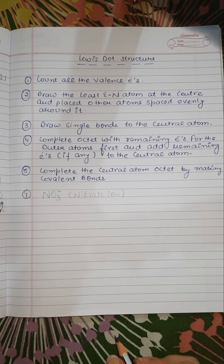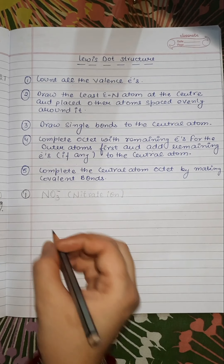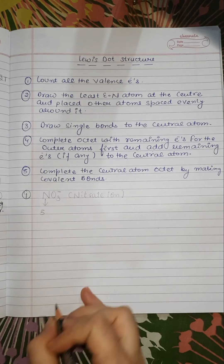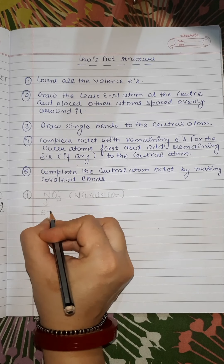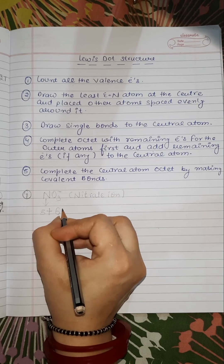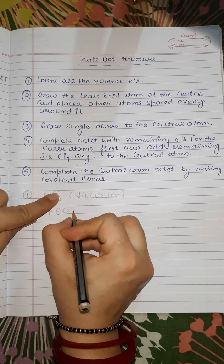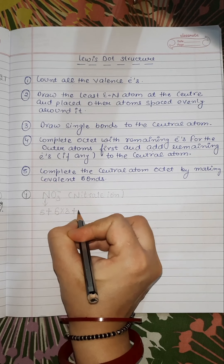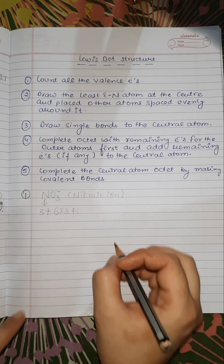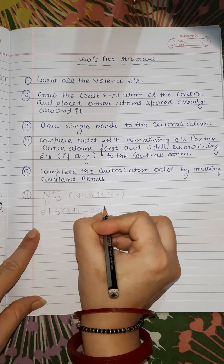The first step is to count all the valence electrons. Nitrogen has 5 valence electrons, plus oxygen has 6 valence electrons. There are 3 oxygens, plus 1 extra electron due to the negative charge. So the total number of electrons is 24.